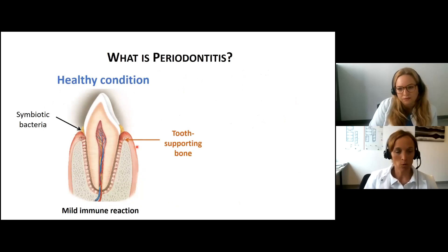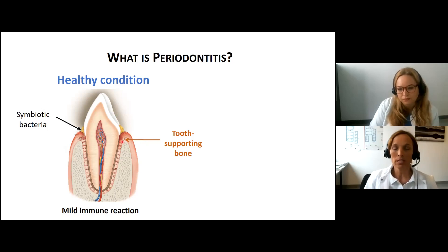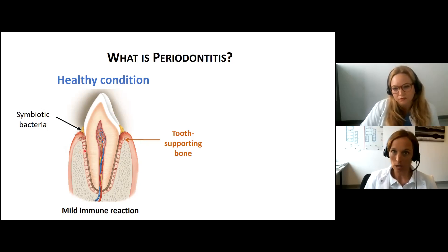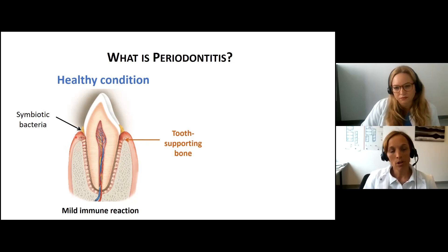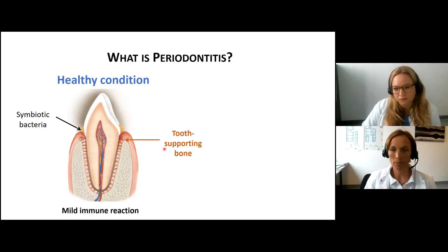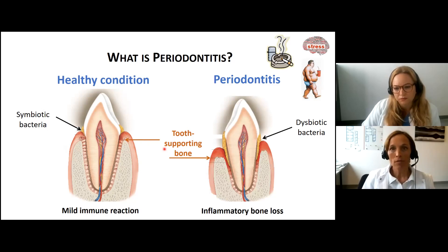Here you can see a healthy tooth. The tooth root is surrounded by alveolar bone and is fixed to the bone by the periodontal ligament — a specialized connective tissue with collagen type 1 that anchors the tooth root to the alveolar bone. In health, the alveolar crest is located approximately one millimeter beyond the tooth crown. With periodontitis, we have an inflammatory destruction of the bone and the periodontal ligament, and the tooth becomes mobile and finally falls out.